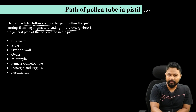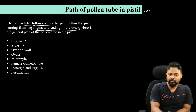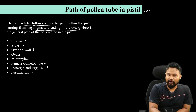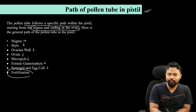First, the stigma. Then what is the style? What is the ovary wall — the ovary, the micropyle, the female gametophyte, the synergids and egg cell. Finally, what is the fertilization process?